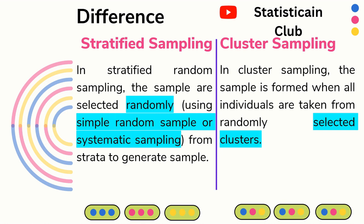In cluster sampling, we select a complete cluster. This is cluster 1, this is cluster 2, and this is cluster 3. For sampling purposes, we randomly select a cluster and then use the entire units of that cluster as the sample.